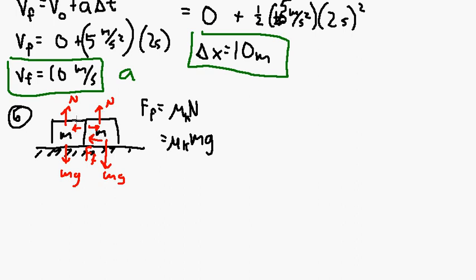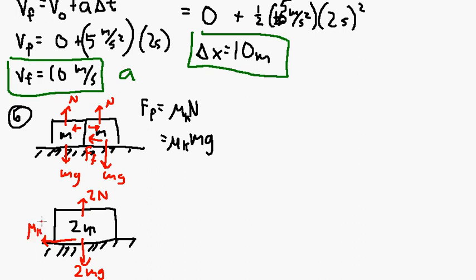So now, we could analyze these separately and do interactions, or we could just analyze them as one body with mass 2m. And we could say it's got a normal force of 2 times n, where n is the normal force of each one of these.